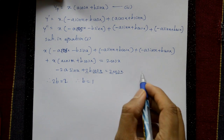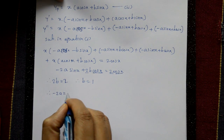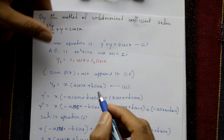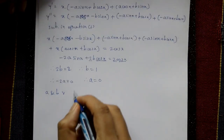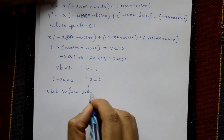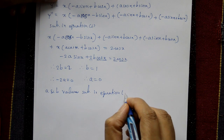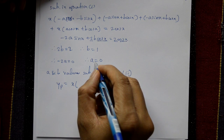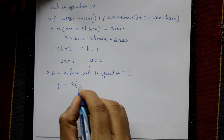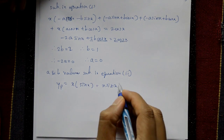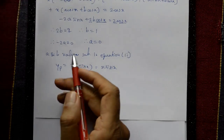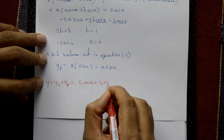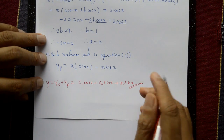Substituting a = 0 and b = 1 into the assumed yp (equation number two): yp = x(0·cos x + 1·sin x) = x sin x. The complete solution is y = yc + yp = c₁cos x + c₂sin x + x sin x. This is the required complete solution by the method of undetermined coefficients.